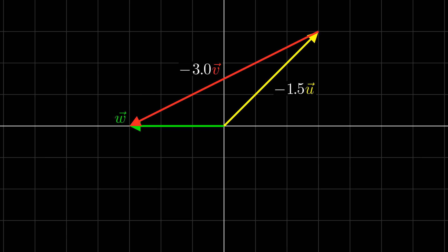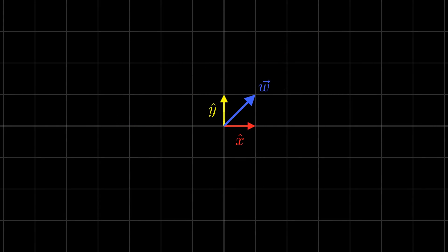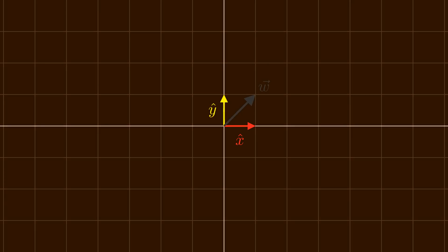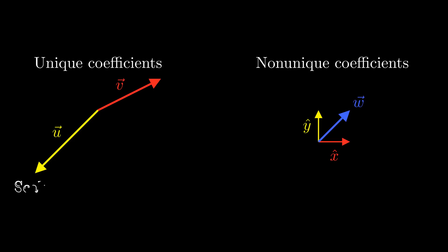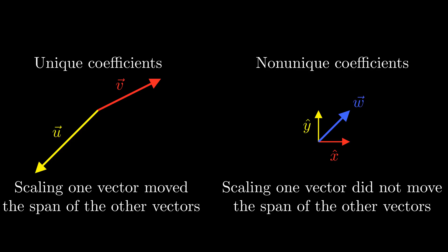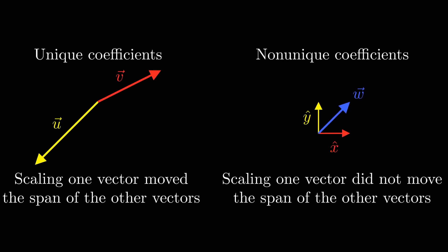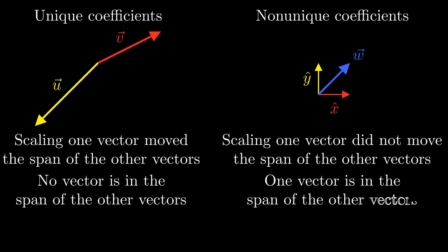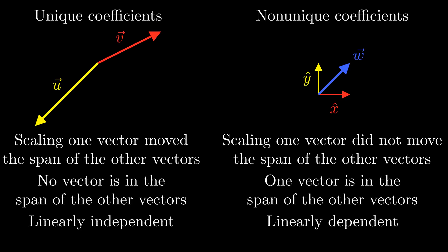So what's the condition to make the coefficients unique? Let's think about where this argument fails with these vectors. Without w, the span of x-hat and y-hat is the whole plane. If we start to think about using w, notice that changing the coefficient of w doesn't really change what vectors we can reach. Thus, we can set the coefficient of w to pretty much anything we want, showing that the coefficient is not unique. So the difference between these two sets of vectors is that on the left, scaling one of the vectors moved the span of the other vectors around, while on the right, scaling one of the vectors did not. This is because on the left, none of the vectors are in the span of the other vectors, while on the right, one of the vectors is in the span of the other vectors. This is precisely the definition of linear dependence and linear independence from the previous video. So it seems that the coefficients being unique is tied to linear independence.